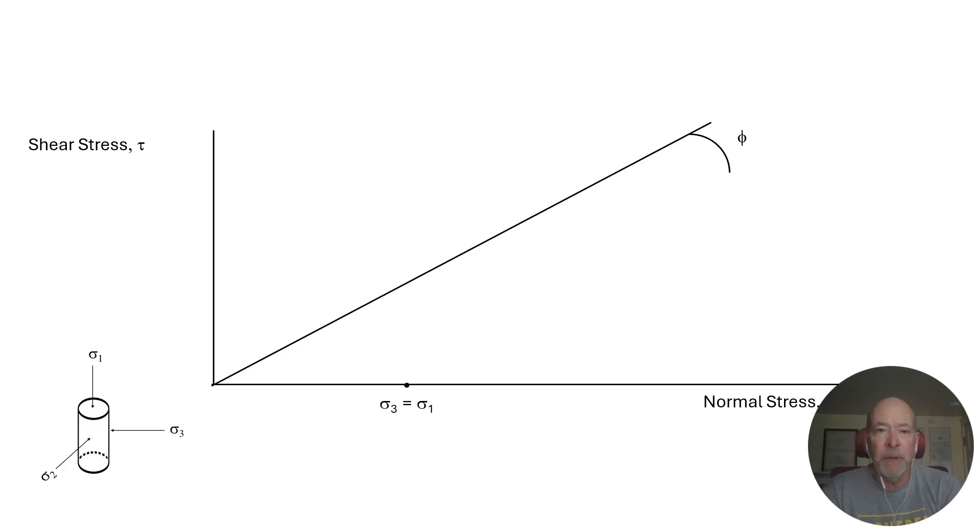So let's put in our failure envelope. We'll remind ourselves of where sigma one, two, and three are. And of course, we've consolidated that out to our initial confining pressure.